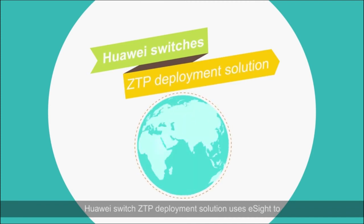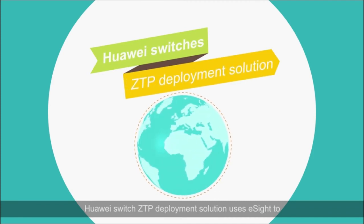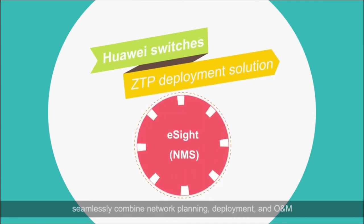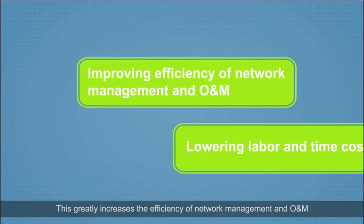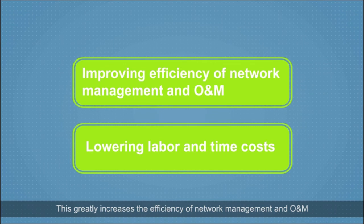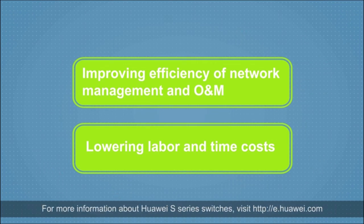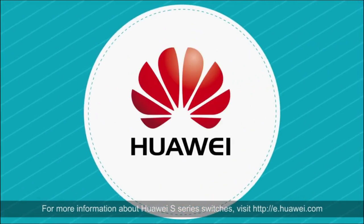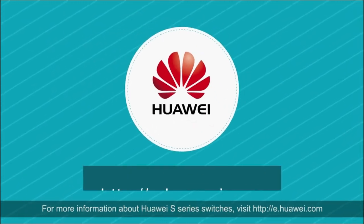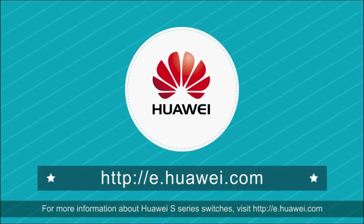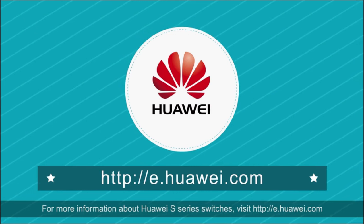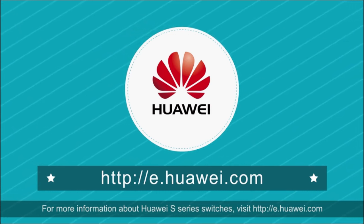Huawei Switch ZTP deployment solution uses eSight to seamlessly combine network planning, deployment, and O&M. This greatly increases the efficiency of network management and O&M, decreases labor costs, and is highly time efficient. For more information about Huawei S-Series switches, visit http://e.huawei.com.